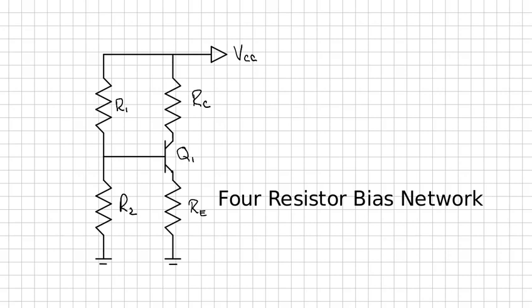Let's learn how to analyze a four resistor bias network. The first step is to make a Thevenin equivalent circuit of R1, R2, and VCC at the base of the transistor as shown down here.